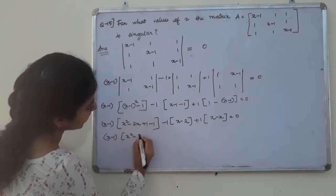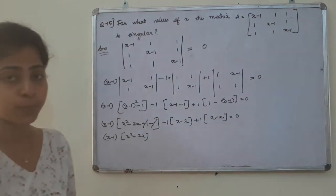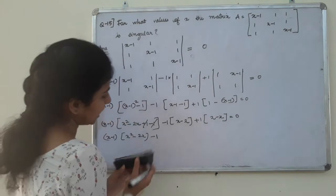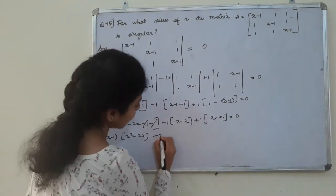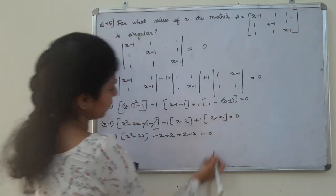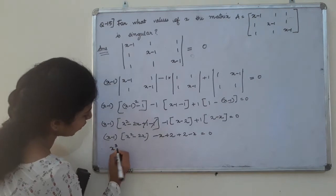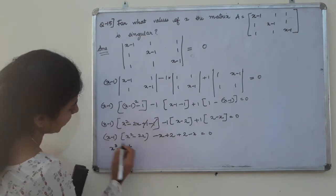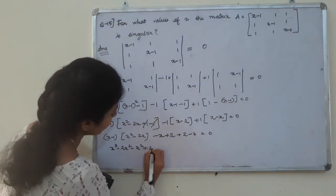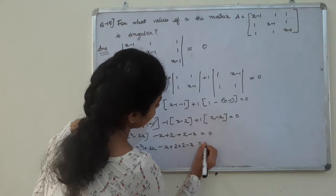Expanding further: x squared minus 2x, then terms cancel. We get x cubed minus 2x squared minus x squared plus 2x minus x plus 2 minus x equal to 0.